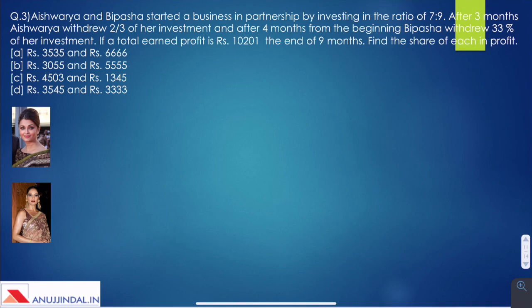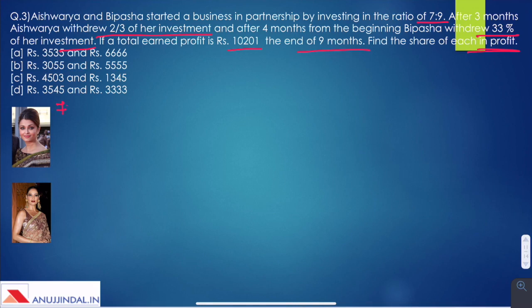Question 3: Aishwarya and Bipasha started a business in partnership by investing in the ratio of 7 to 9. After three months, Aishwarya withdrew two-thirds of her investment, and after four months from the beginning, Bipasha withdrew 33% of her investment. The total earned profit is 10,201 rupees by the end of nine months. Find the share of each in the profit. The initial amount invested by Aishwarya is 7x and by Bipasha is 9x.